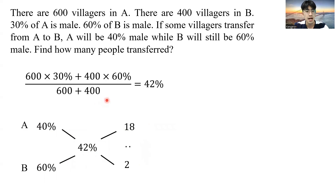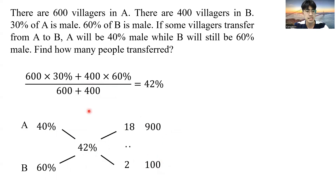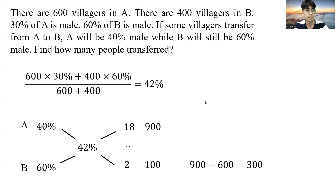Since the total number of people is still 1,000 villagers, this corresponds to 900 villagers and 100 villagers. From 600 villagers to 900 villagers, 300 villagers have been shifted. Now let us move on to the next problem.